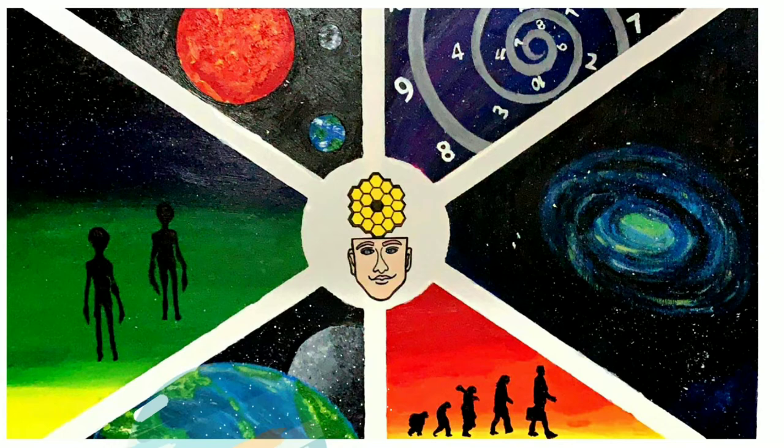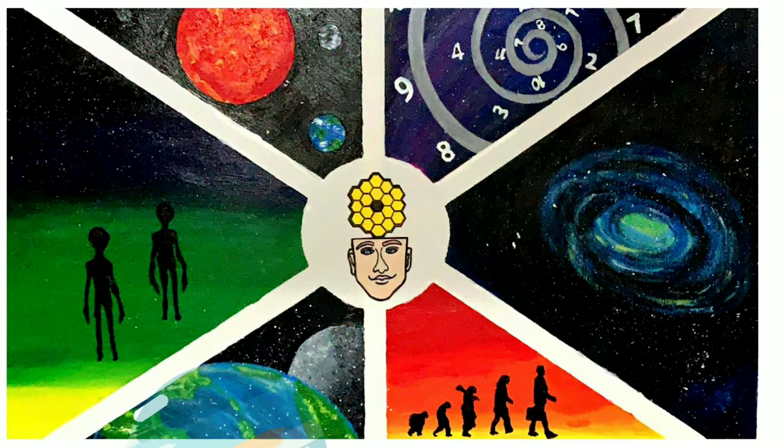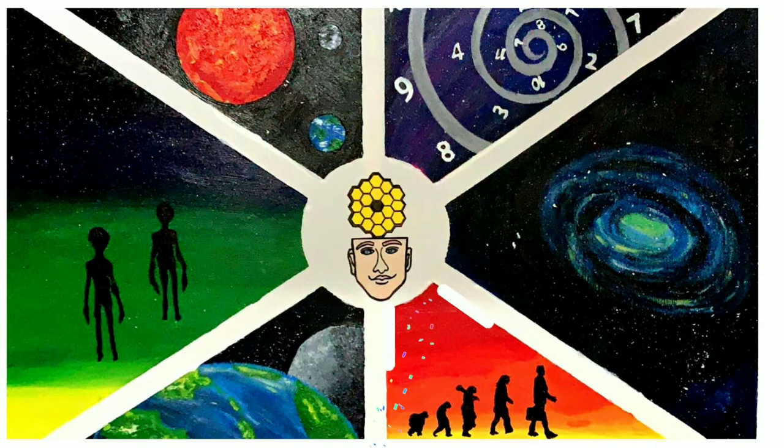This segment indicates that the telescope will provide a deeper understanding of the birth of our Earth and Moon. Lastly, Webb will provide the idea of how life originated and evolved on our planet. This will supposedly define our purpose in the universe.